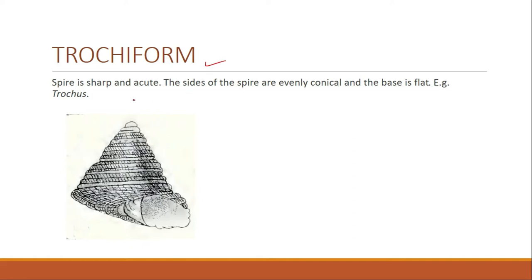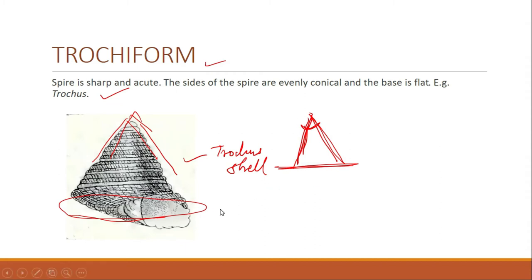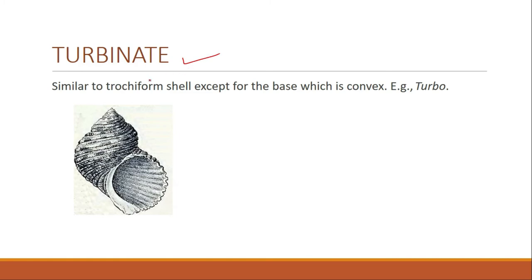The next important shell form is trochiform. In trochiform, the spire is sharp and acute, the sides of the spire are evenly conical, and the base is flat. The example is Trochus. You can see that the sides of the spire are sharp and acute, evenly conical, and the base is flat — when you hold the shell in your hand, you'll find the base is flat.